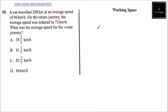This is question number 39. We are told a car traveled 288 kilometers at an average speed of 96 kilometers per hour. On the return journey, the average speed was reduced to 72 kilometers per hour. What was the average speed for the whole journey?